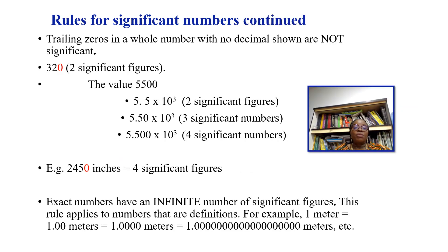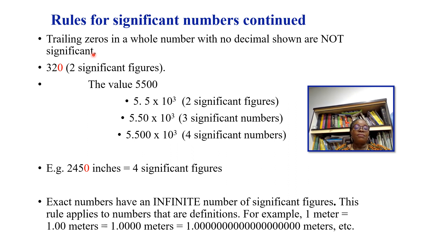Continuing the rules: trailing zeros in a whole number with no decimal point are non-significant. For example, in 320 there is no decimal point, so the trailing zero is non-significant — 320 has two significant figures. Such values can be written in scientific notation, represented as A × 10^n.